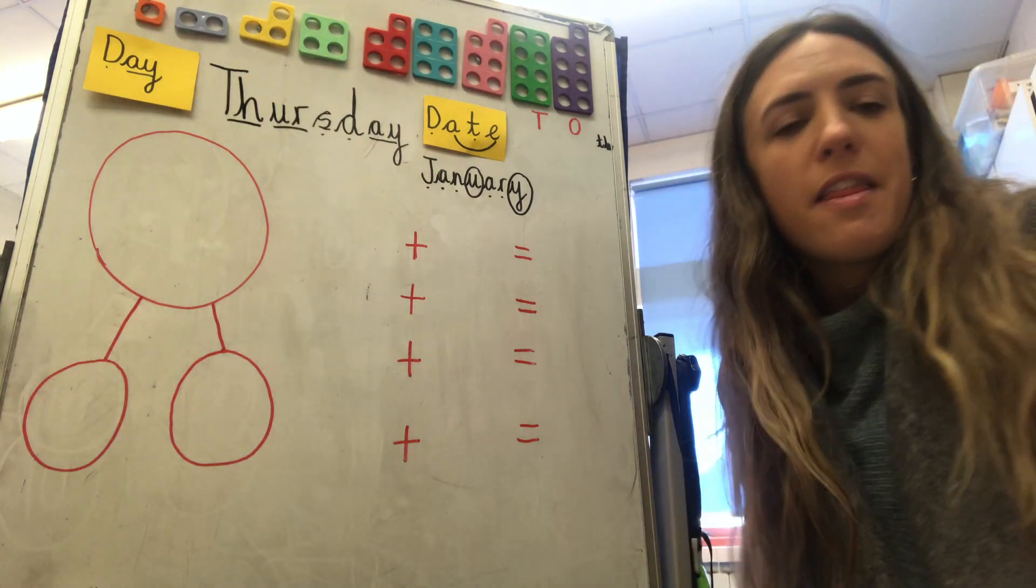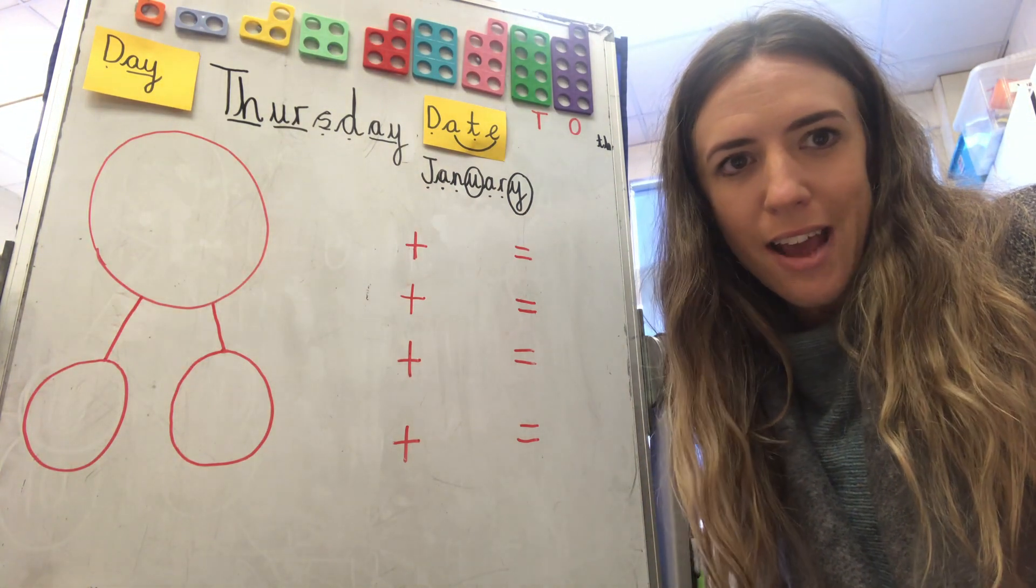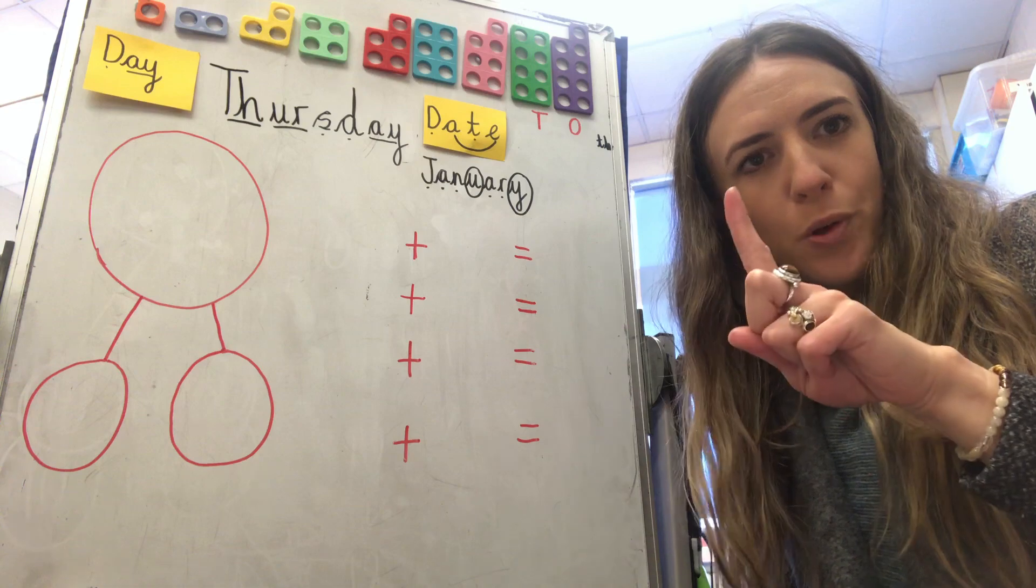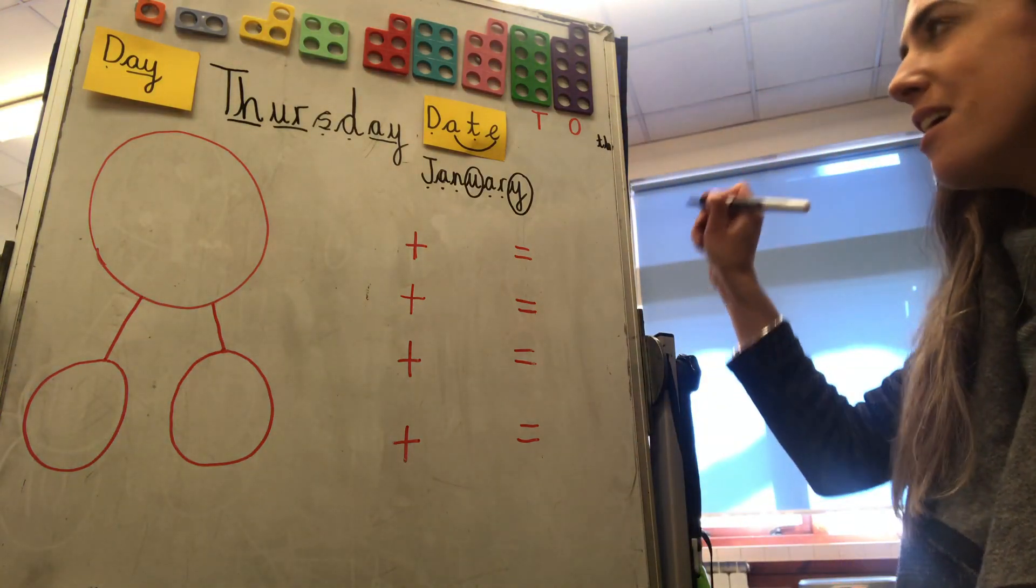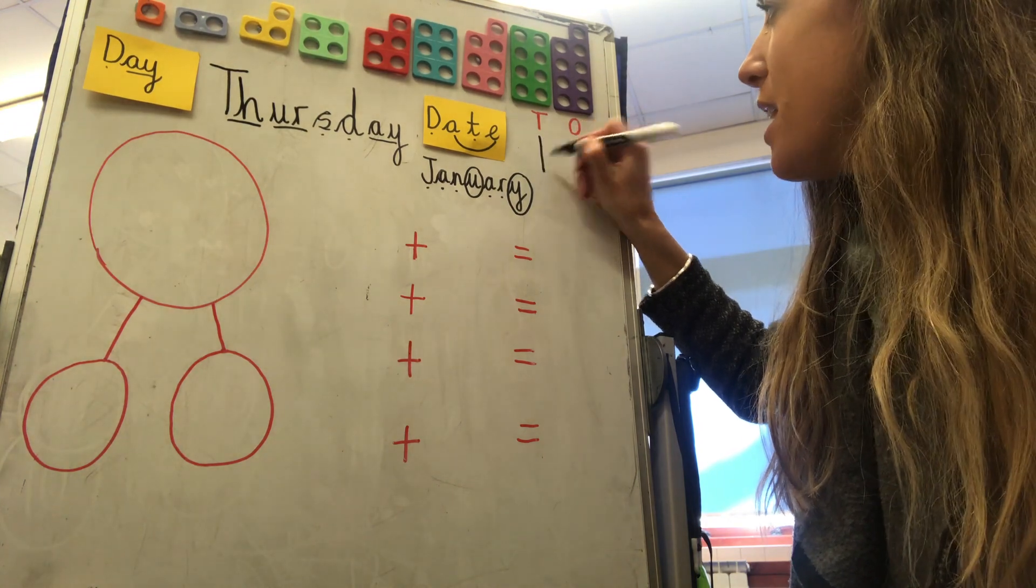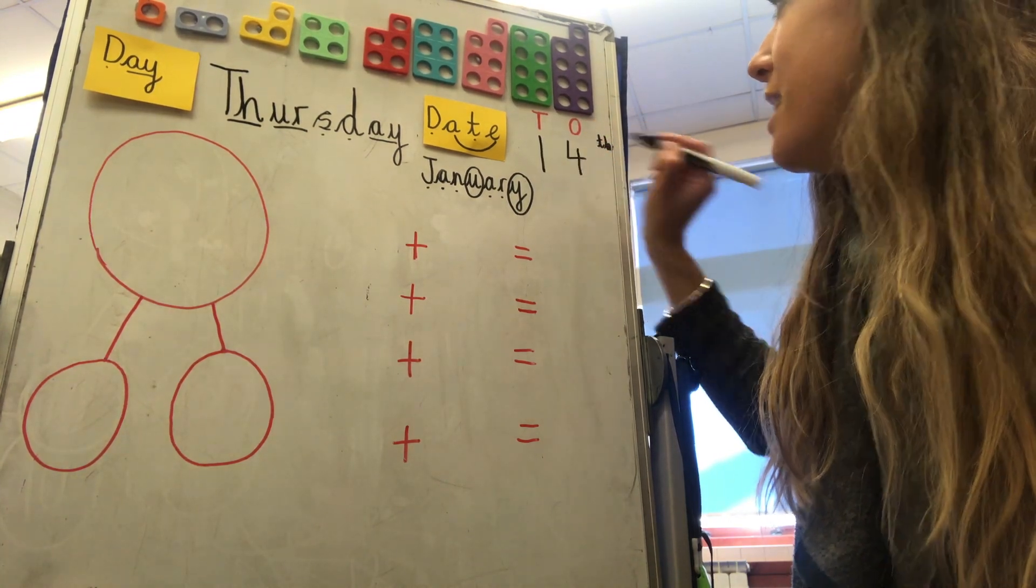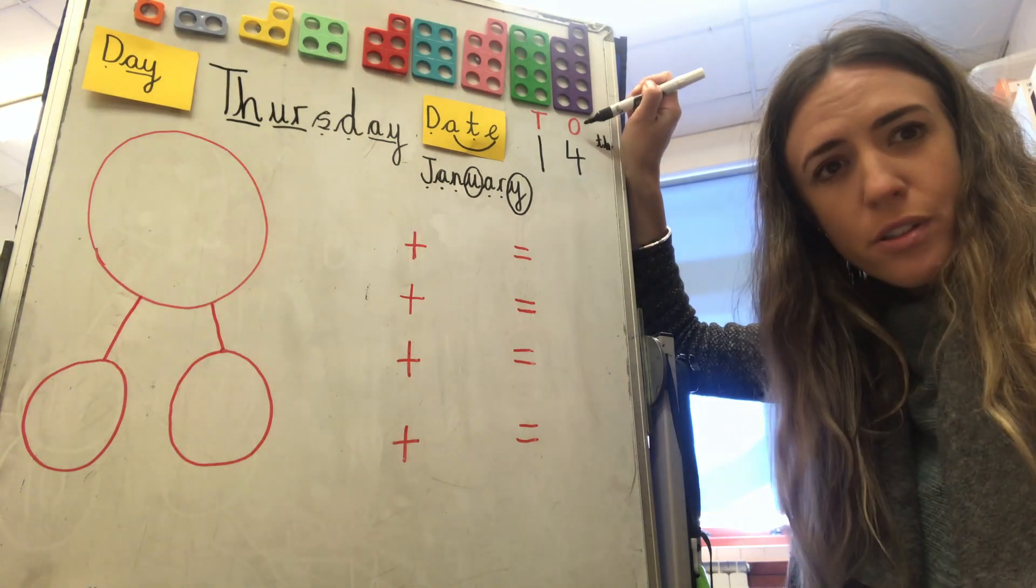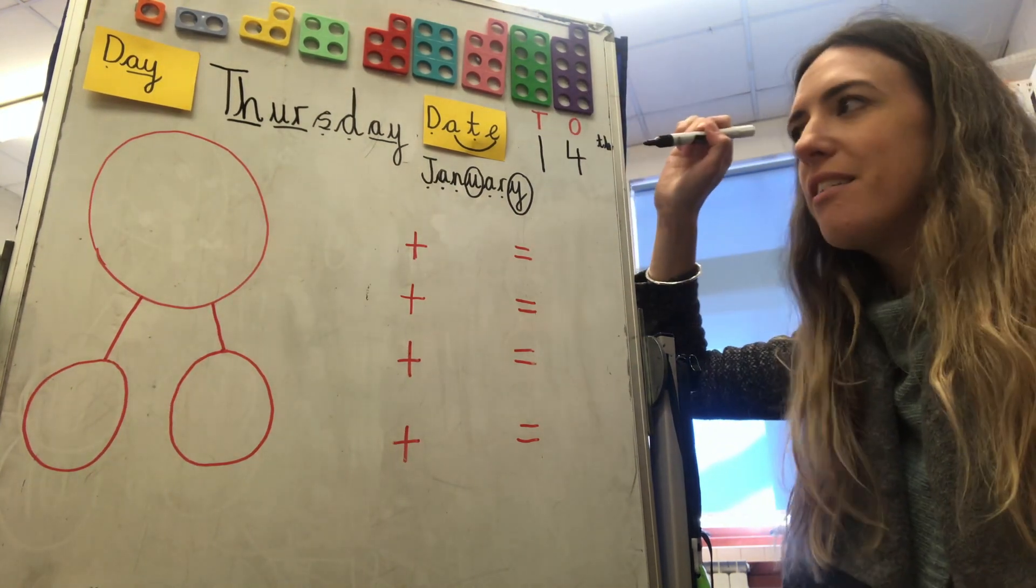Right then. It was the thirteenth yesterday, so we need to add one more. It's the fourteenth today. Well done. So thinking of number fourteen in tens and ones. How many tens are there?